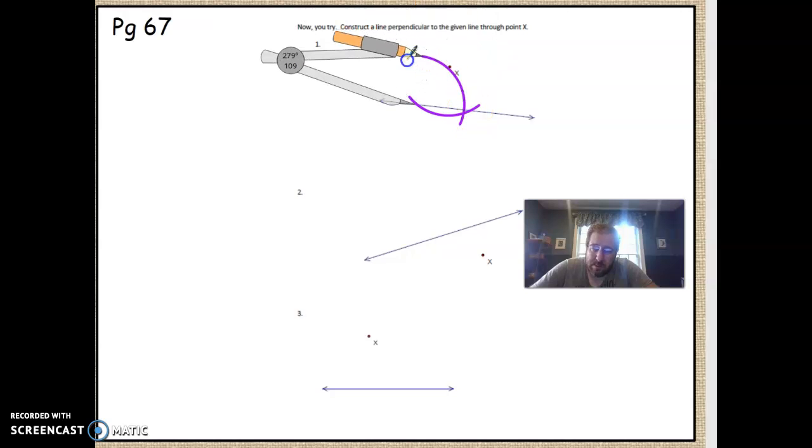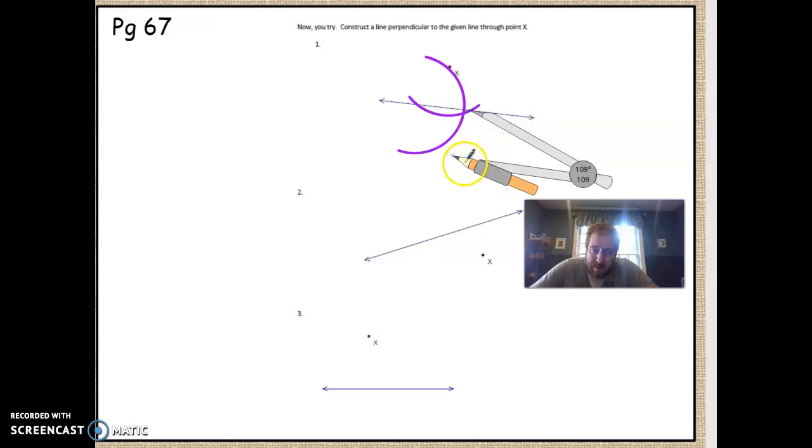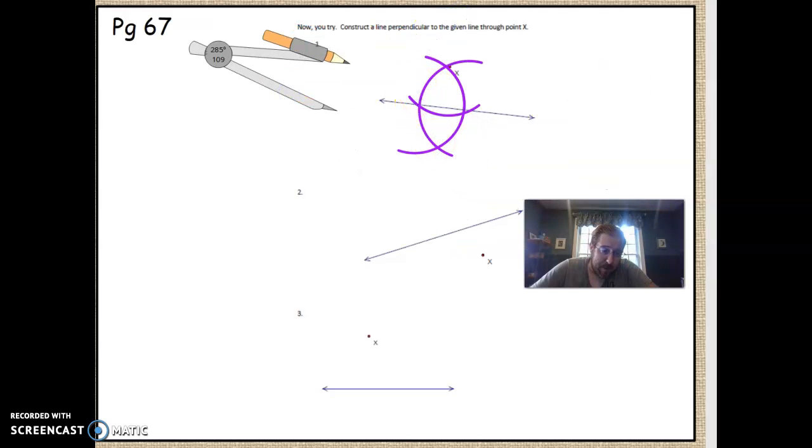What that essentially has done is giving me two points of intersection that are equal distance to X. Now from those two points of intersection, I'm going to construct my perpendicular bisector, just like I did in the last video. Move it over to here and make the exact same arc. Now what you'll notice is that we have a perpendicular bisector that, when connected, should go through point X precisely, just like that.